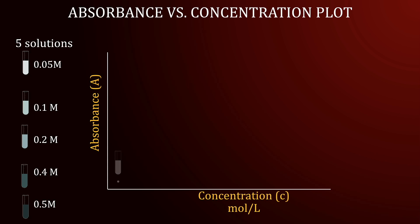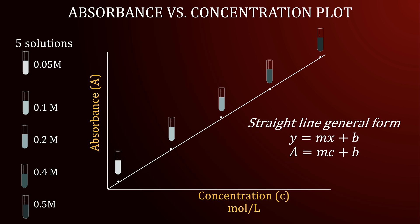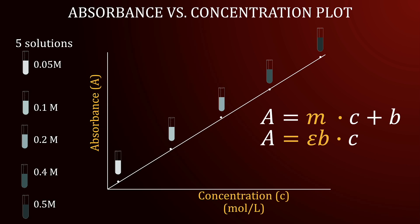What Beer's law shows is that if we plot the absorbances of solutions against their concentration — that is, if the solution follows Beer's law — there is a linear relationship between the two variables. Since this plot follows the general form of a straight line, the slope of the line corresponds to the product of the molar absorptivity constant and the path length through the sample. We will utilize this mathematical relationship in our lab.